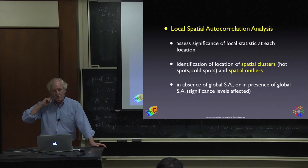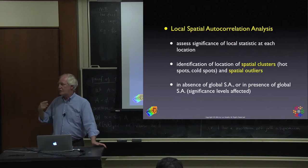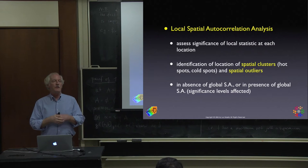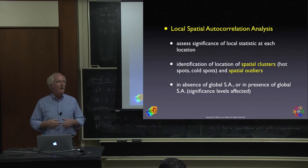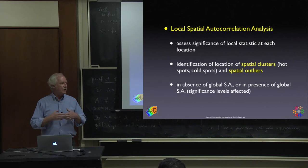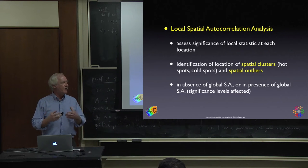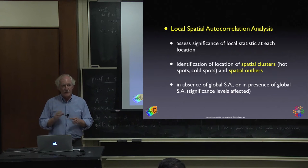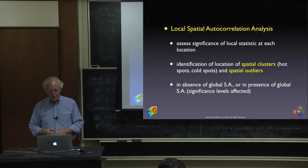The inference of the local statistic is complicated by the fact that local inference may occur in a context of existing global positive spatial autocorrelation, not global spatial randomness. You have to ask: is the local cluster I find just a byproduct of globally autocorrelated data, or is it something of interest in itself? That's a really tricky problem.